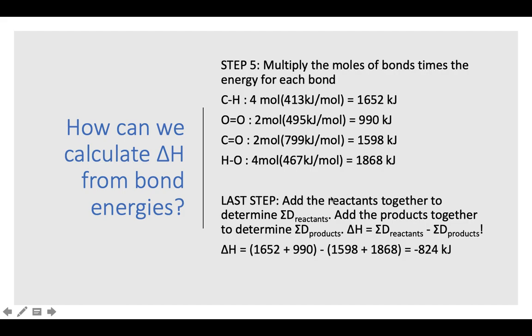And then the last step is we actually have to find the sum of our reactants and the sum of our products and then subtract them. So my reactants were methane and O2. And so if I take those amounts of energy for the reactants and add them together and then subtract the sum of the energies of the products, I end up with an overall change in enthalpy for this reaction being a negative 824 kilojoules. So what does that mean?